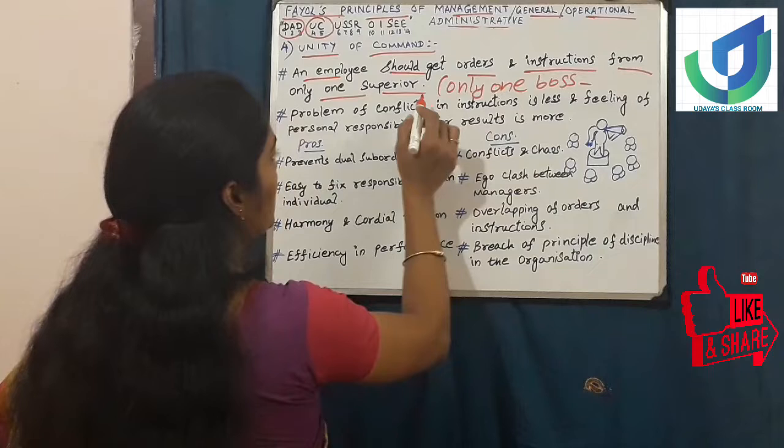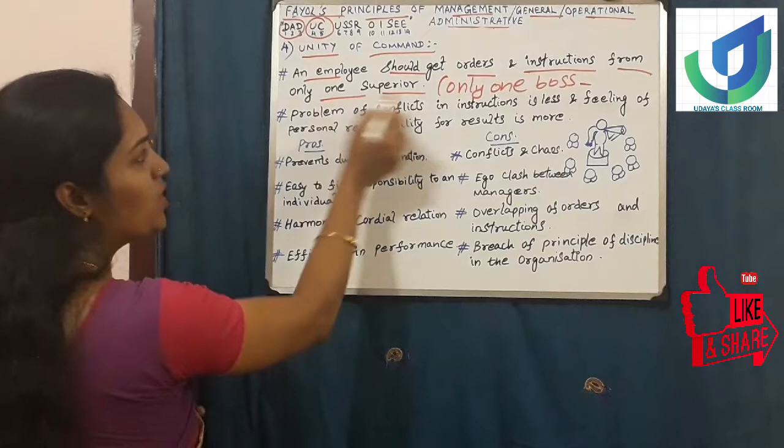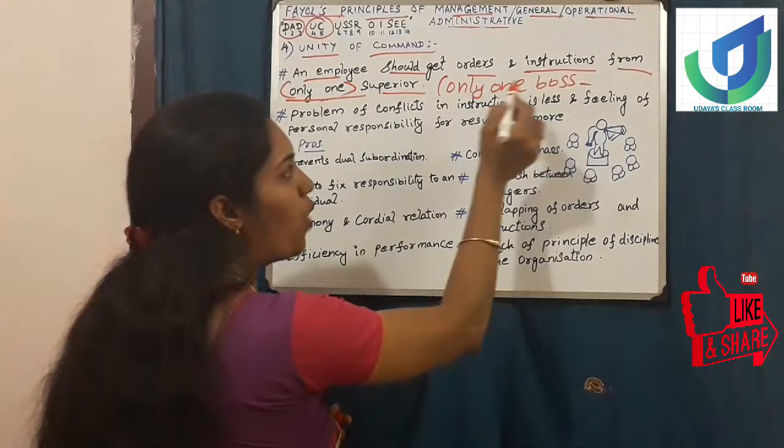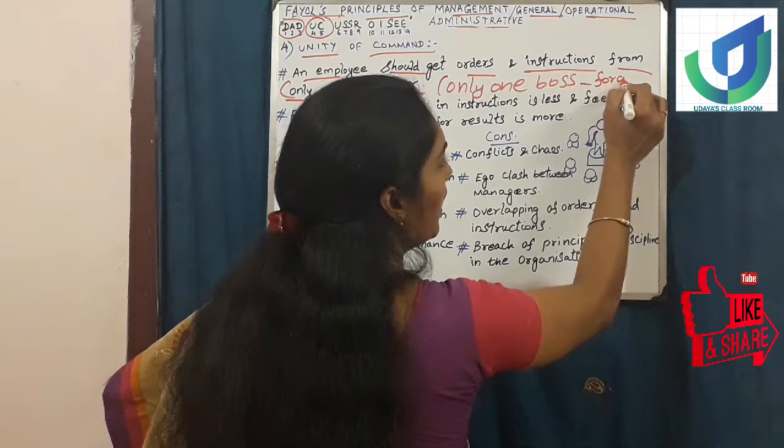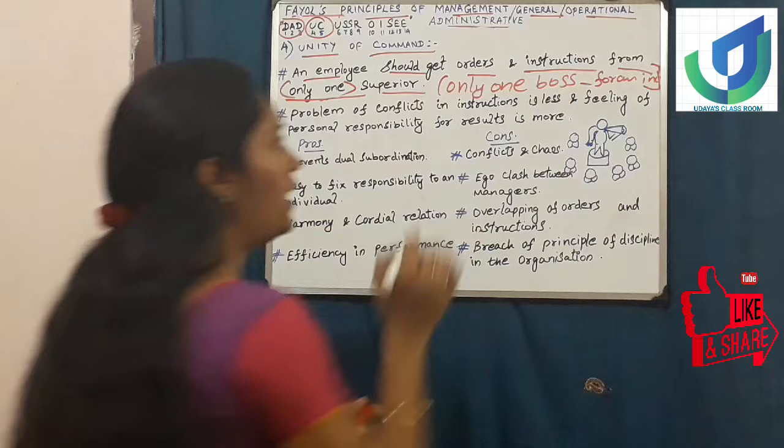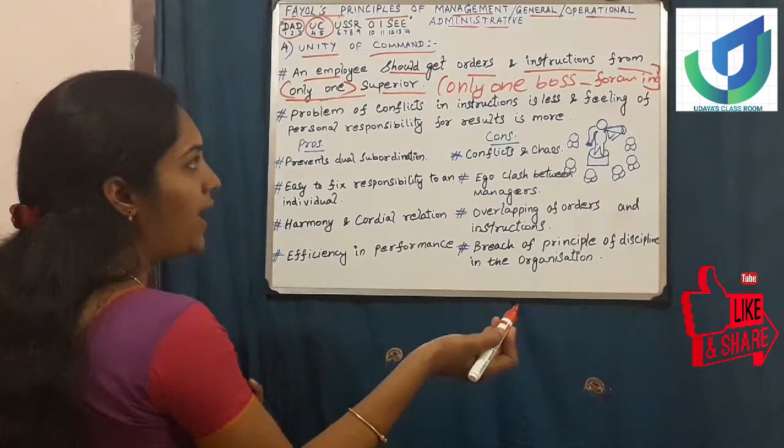Only one boss. This 'only one' is an important key term. Only one boss should give instructions to the subordinates for an individual. So one individual should get instructions from only one boss. That is all simple.